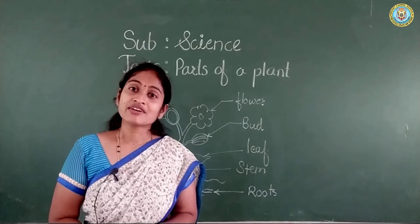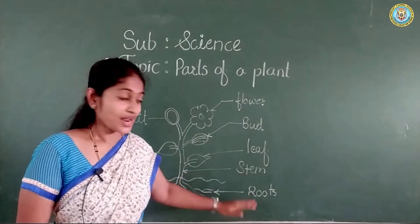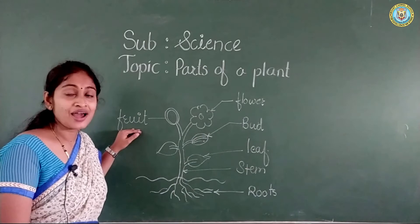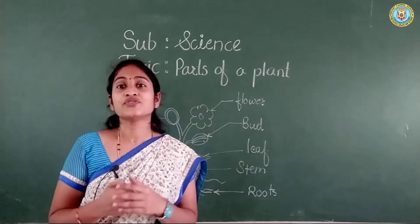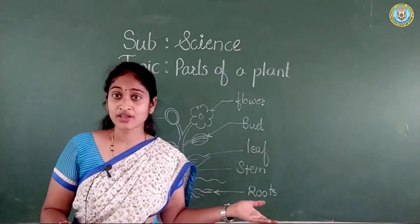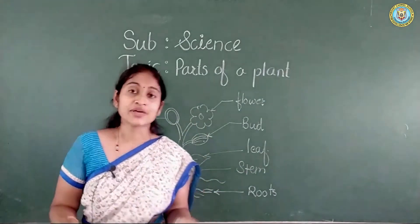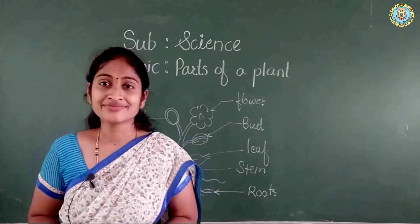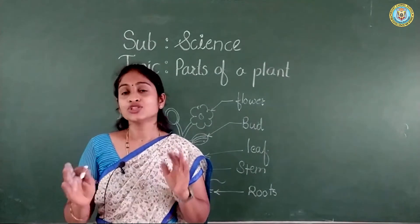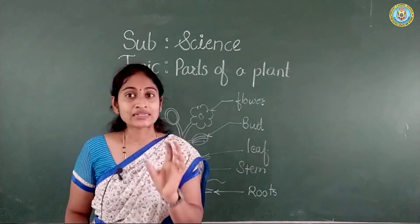My dear students, today in our class we have learned about various parts of a plant. These are the basic parts: roots, stem, leaf, bud, flower and fruit. We have seen some vegetables — cabbage is a leaf, onion is a stem, carrot is a root. Do you know tomato? Tomato is fruit. In the kitchen there are so many vegetables — you take any one vegetable and guess which part of the plant it is.